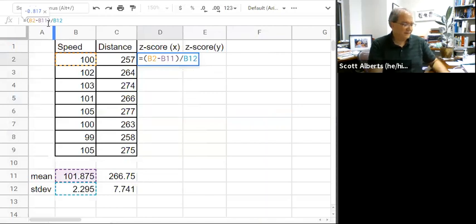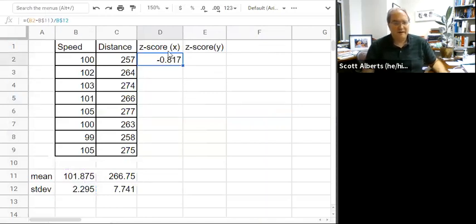And then I'm going to put in my dollar signs so that we can drag that down. So here we are again with that dollar sign. Now we've calculated all of those z-scores. Okay so that's pretty cool.